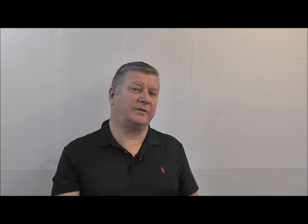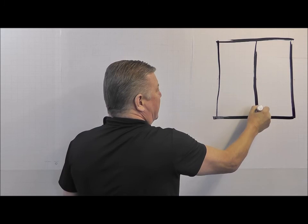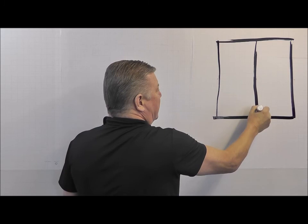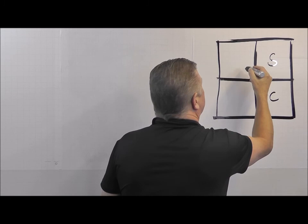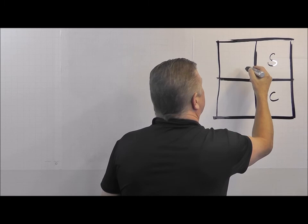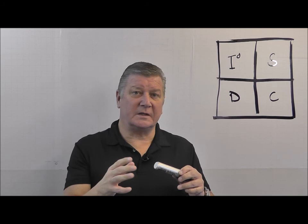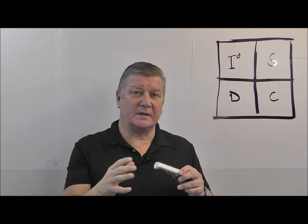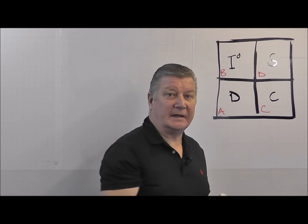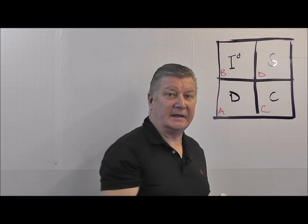Welcome back. Let's go through the scoring now. I'll draw it on the whiteboard and talk you through exactly what your scores might mean. On page five you've got a four-square that looks something like this. Up here we'll call that the Sales box, this one the Commitment box, this one the Incentive or Discount box, and this one the Dismissive box. Those four boxes correspond to the sheet letters A, B, C, and D.